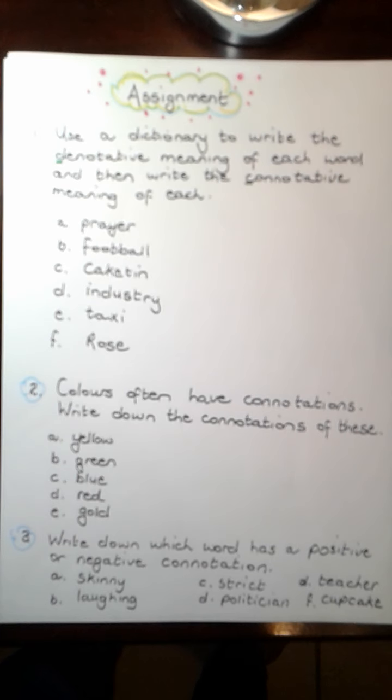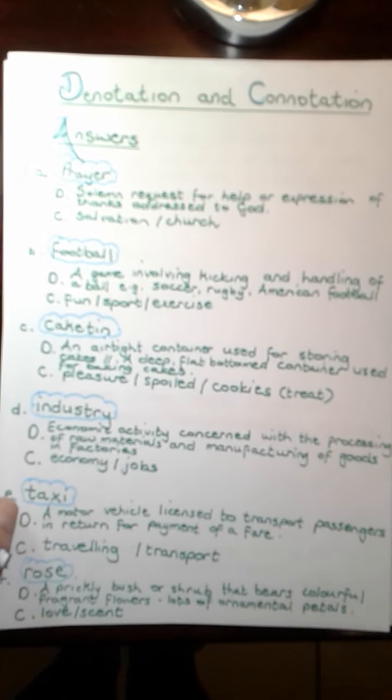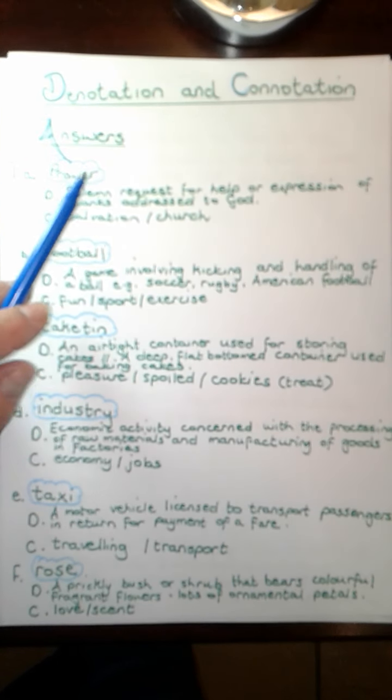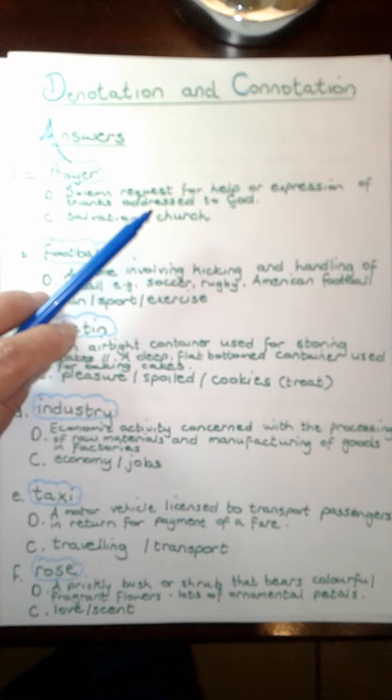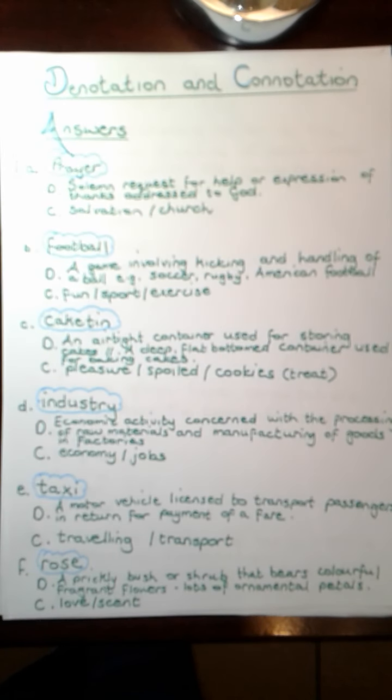Please take out your language books where you did your answers for denotation and connotation. Your assignment was to use a dictionary to write the denotative meaning of each word and then write the connotative meaning. When we look at the word prayer, the denotative or dictionary meaning is a solemn request for help or expression of thanks addressed to God. The connotation I adhere to the word prayer: salvation and church are two examples. You might have something else as well.